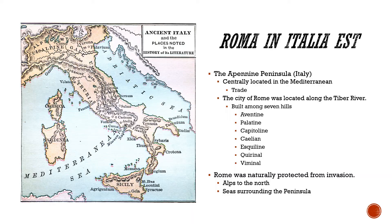Roma in Italia Est — Rome is in Italy. It's located on the Italian Peninsula, otherwise known as the Apennine Peninsula. Rome as a civilization, or Italy larger as a country, is very centrally located in the Mediterranean.